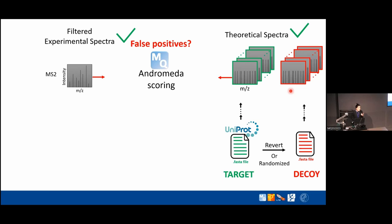The best Andromeda score wins. The main assumption is that false positives have a similar likelihood of matching to the target or decoy database. So by counting how many experimental spectra best match a decoy theoretical spectrum, we can infer the proportion of false positives in the target database. Matches to decoy spectra are excluded from final results, but used to estimate the false positive proportion.